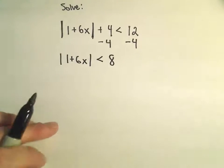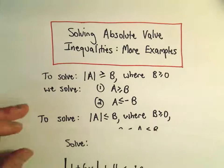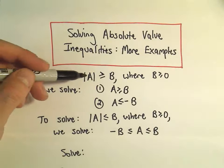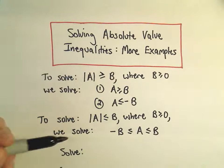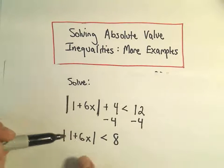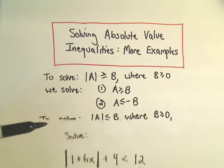And again now if we go back to our little checklist here, it says if you have the absolute value of something greater than or equal to B, well you do this. But we've got the second case. We've got the absolute value of something that's less than a number.